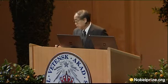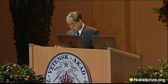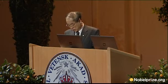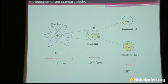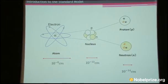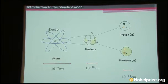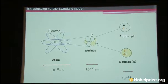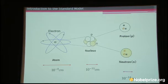Let me start by reminding you of the structure of matter in the microscopic limit. Matter is made of atoms, and the atom consists of the atomic nucleus and the electron. The atomic nucleus is made of the proton and neutron, and the proton and neutron are made of two kinds of quarks, U and D.